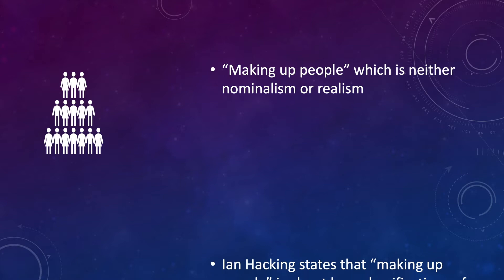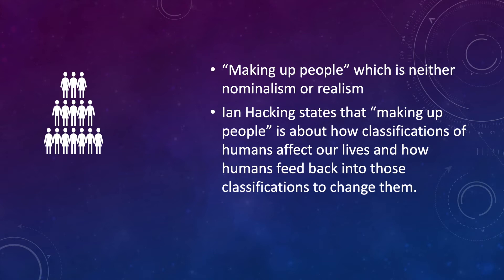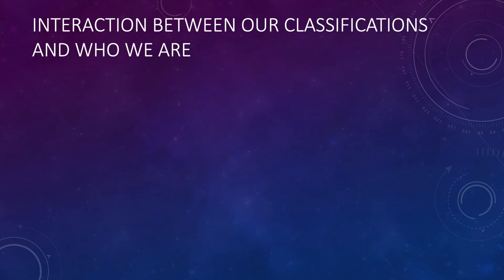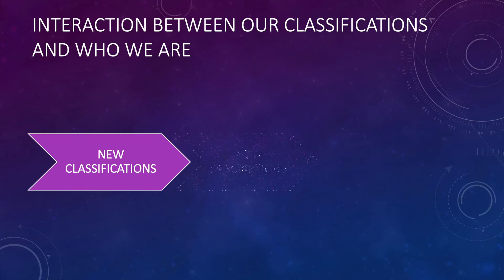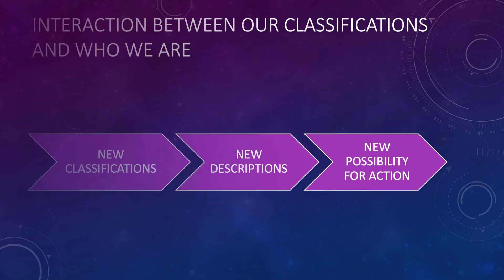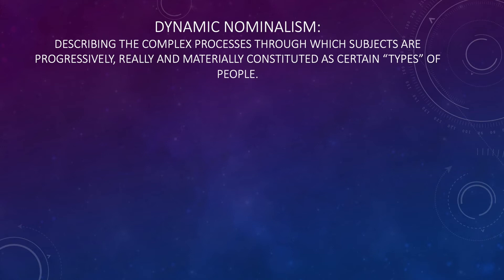Ian Hacking states that making up people is about how classifications of humans affect our lives and how humans feed back into those classifications to change them. There is an interaction between our classifications and who we are. Additionally, new classifications create new descriptions and new possibilities for action. This is where the term dynamic nominalism comes in, which is defined as describing the complex processes through which subjects are progressively, really, and materially constituted as certain types of people.